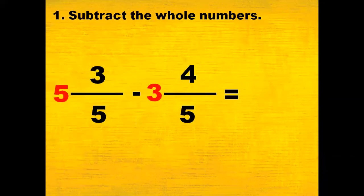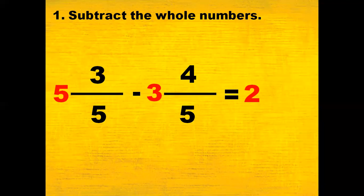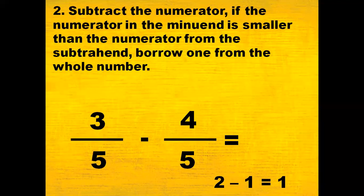Step 1: subtract the whole numbers. We have five and three-fifths minus three and four-fifths. The whole numbers here are 5 and 3 — the numbers shown in red. So, 5 minus 3, the answer is 2. Now, let's subtract the numerators. If the numerator in the minuend is smaller than the numerator from the subtrahend, borrow one from the whole number.